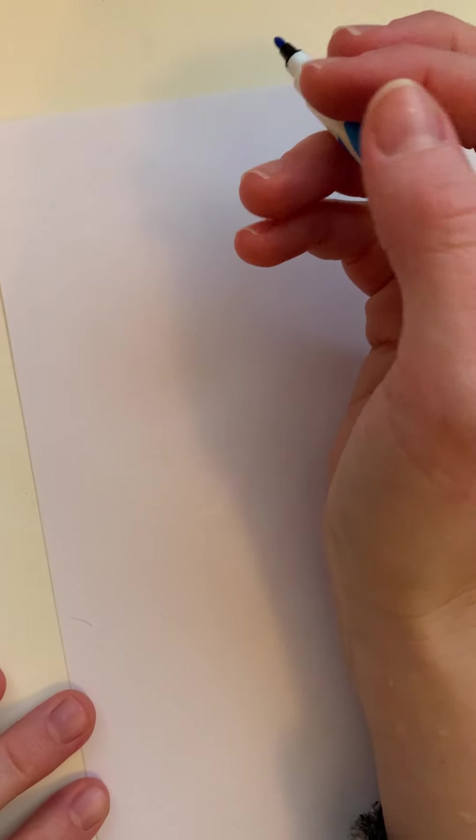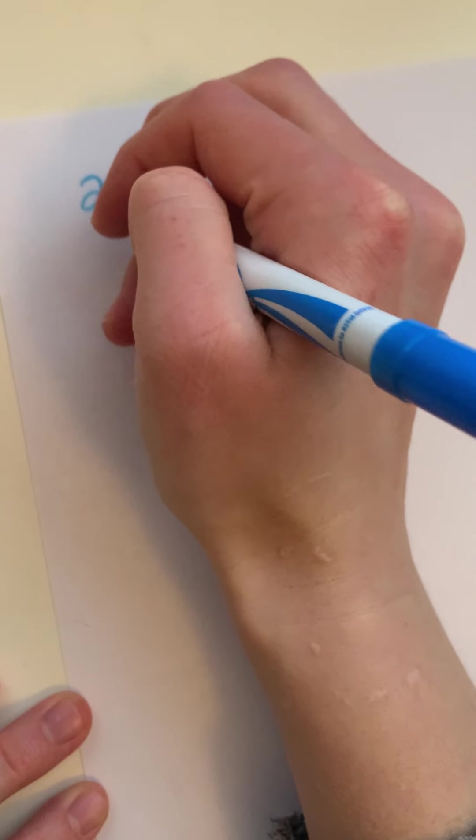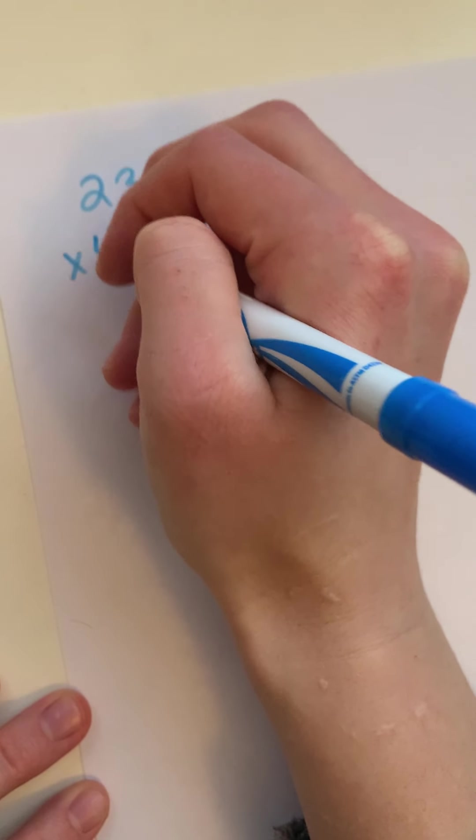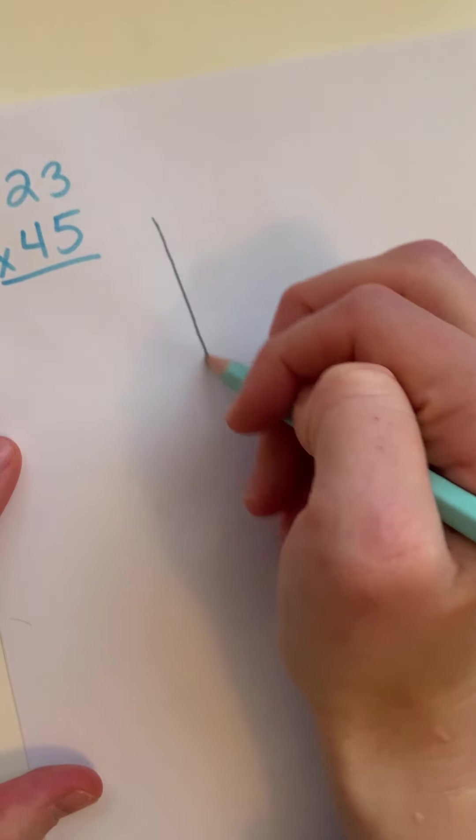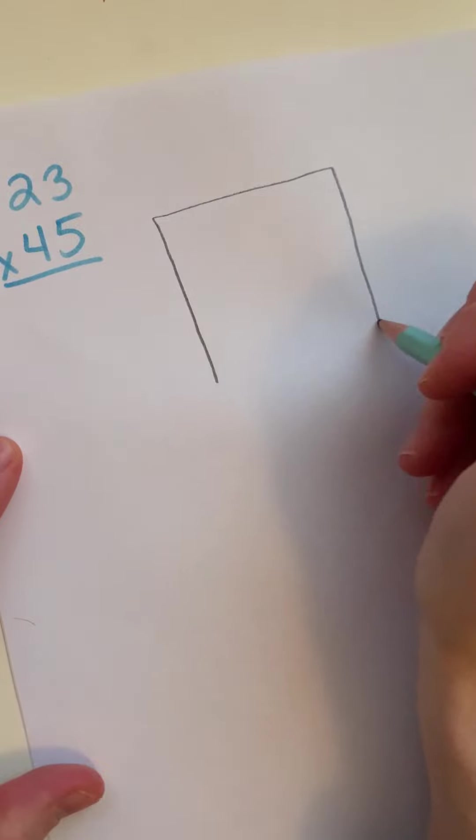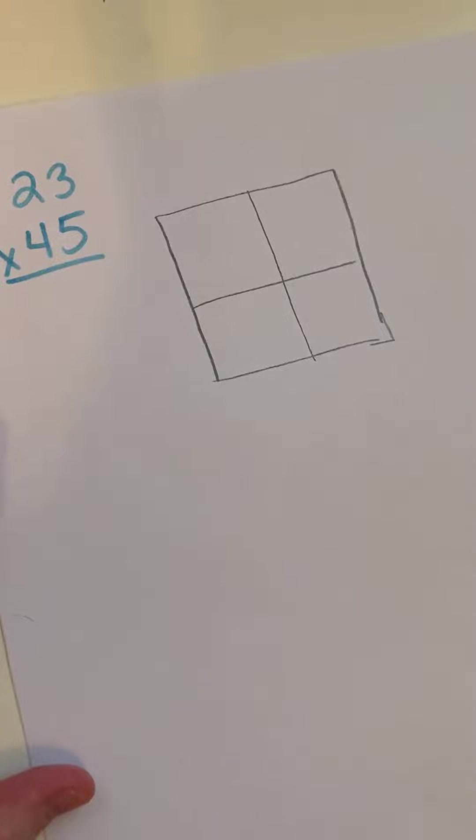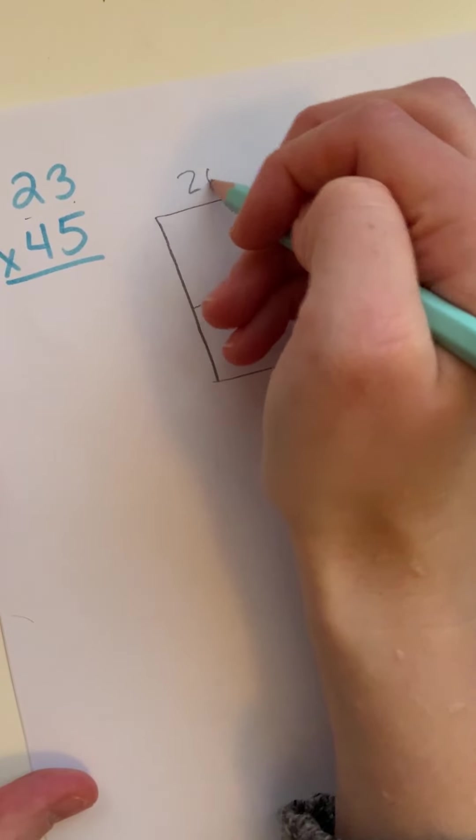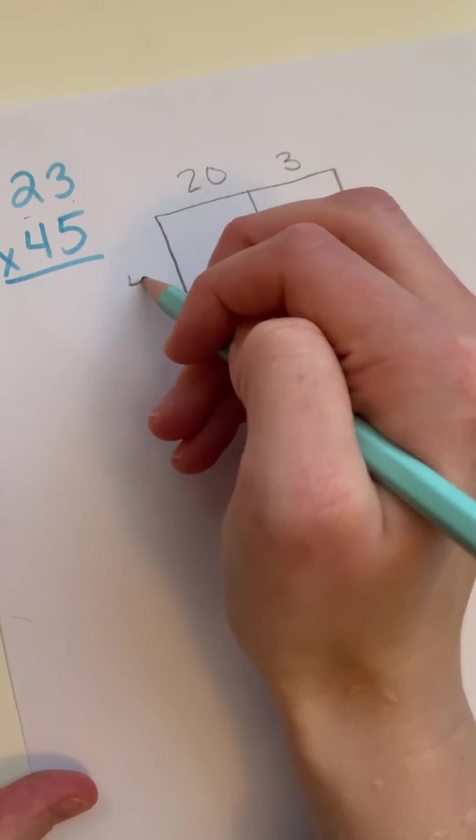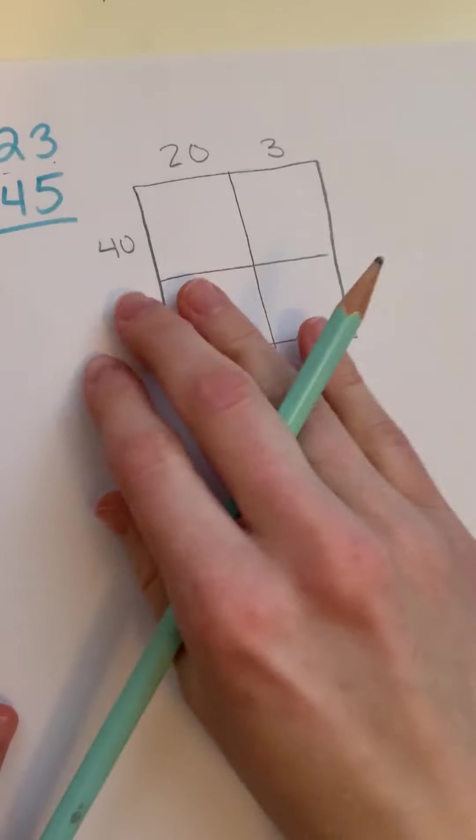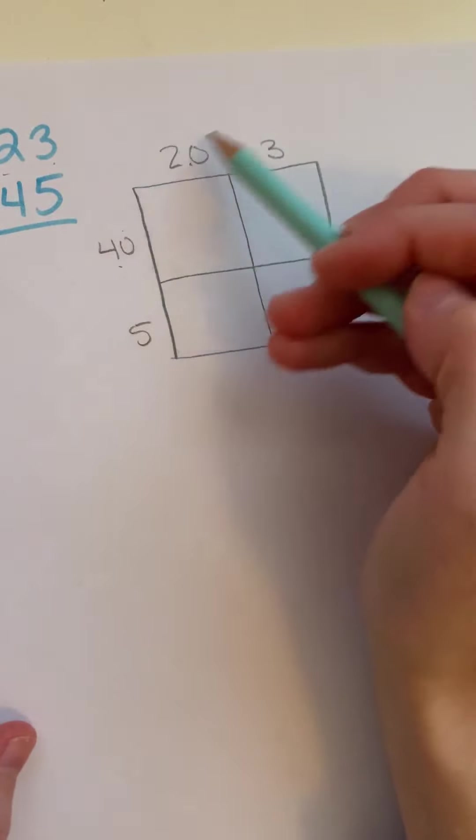So let's go ahead and look at this first problem. I have 23 times 45. There's a couple of ways that I can go about solving this problem. One way that you've been shown is with this area model here, and we're splitting it into four parts. We have a 20 and a 3, a 40 and a 5. So what we do then is we multiply each part.